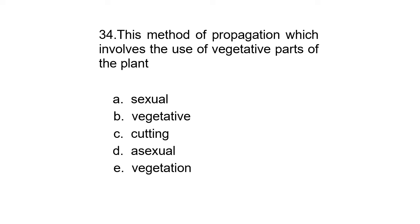Question 34. This method of propagation which involves the use of vegetative parts of the plant. A. Asexual, B. Vegetative, C. Cutting, D. Asexual, or E. Vegetation. The correct answer is A. Asexual.